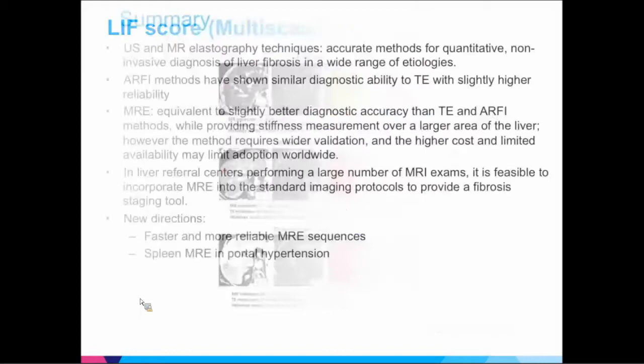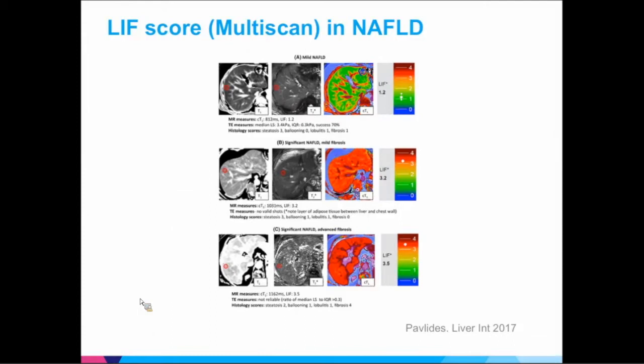To summarize: ultrasound elastography is an excellent technique. It can fail or be unreliable. In cases where you need good HCC screening or better characterization of liver disease with fat, iron, and stiffness, MRI is the way to go — you can get all that information in about 10 minutes.